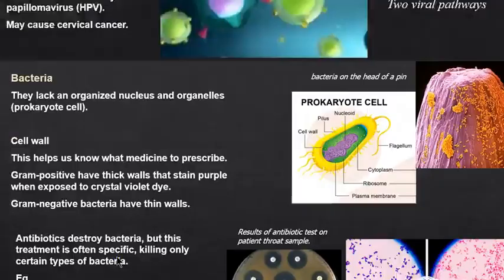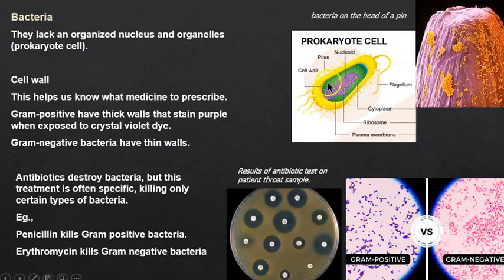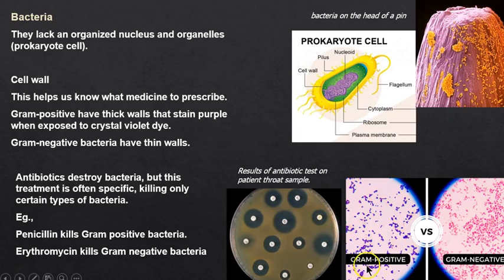Now a whole new group — different from viruses: prokaryotes. Their DNA and organelles are scattered — very different from human cells. Bacteria are everywhere. The cell wall helps us identify different bacteria because we use a crystal violet stain. If it stains purple, we call that gram-positive; if it doesn't stain purple, we call it gram-negative.